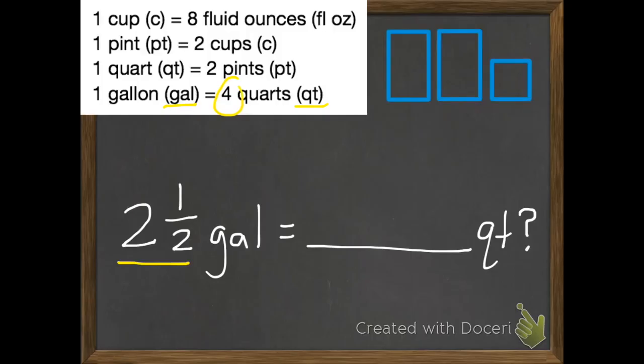So here's two and a half. Each full gallon equals four quarts, so four and four. And how much will half of a gallon equal? If a whole gallon is four, half of four is two. So we have four plus four plus two, which is ten. So two and a half gallons equals ten quarts.